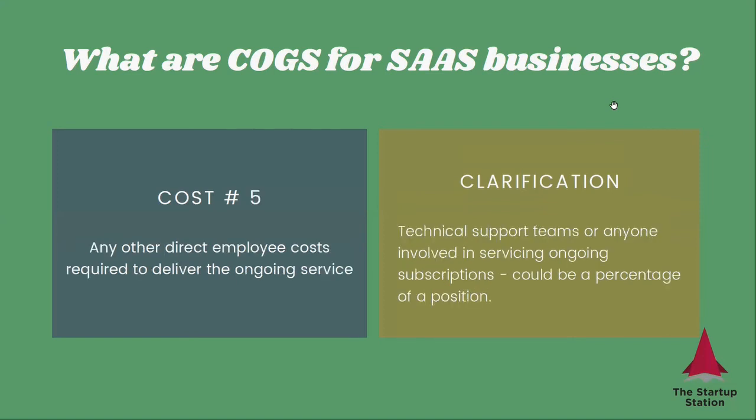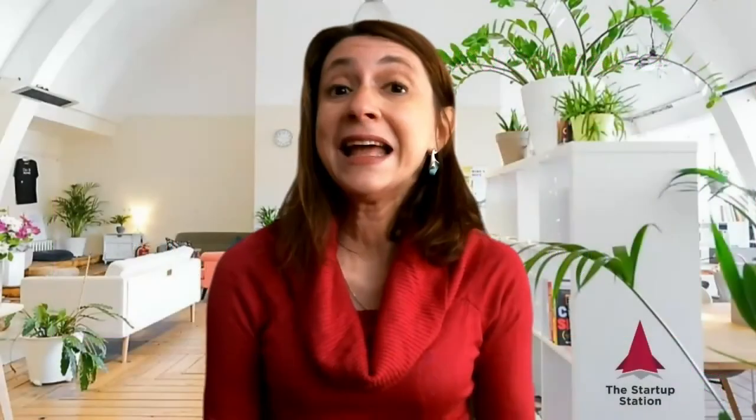And finally, cost number five: any other direct employee costs required to deliver the ongoing service. Again, for all of these costs related to employees, they can be a percentage of the position if they spend only a percentage of their time. If you liked this video, please like and share with your friends and colleagues. Subscribe to our YouTube channel for more strategic finance tips every week, and follow us on social media for more exciting and useful content for entrepreneurs.